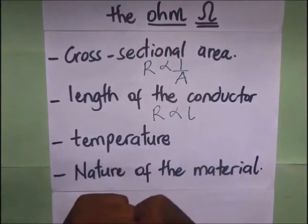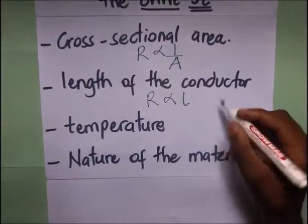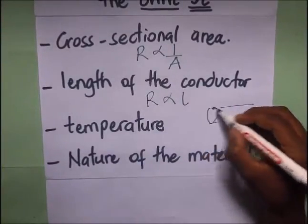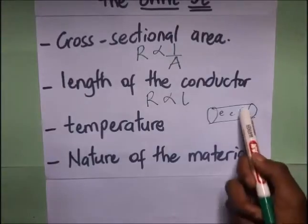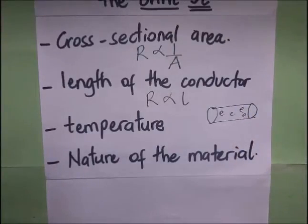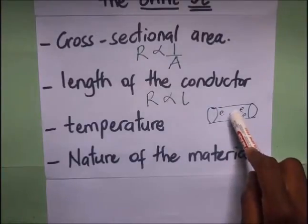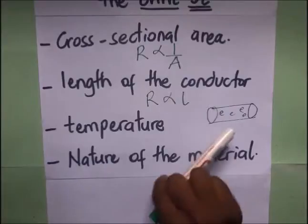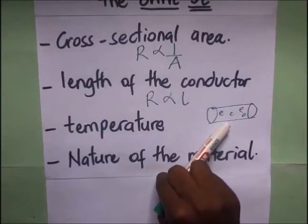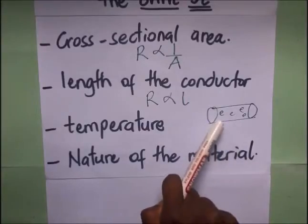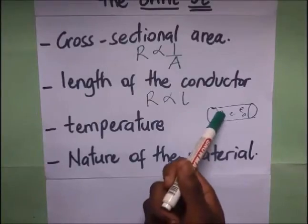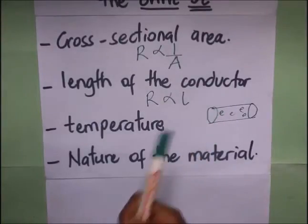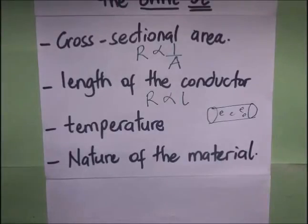Then let's go to temperature. If we increase the temperature in this conductor — this conductor has free-moving electrons — if this conductor is heated up or if its temperature is increasing, it means that the vibrational energy of the atoms in this conductor is going to increase. This increase in vibrational energy or amplitude of the ions will make the collisions between the drifting electrons and the atoms greater. These bigger collisions will reduce the drift velocity of the electrons, and a reduction in drift velocity will definitely lead to an increase in resistance.